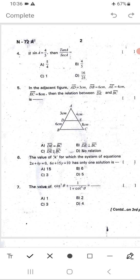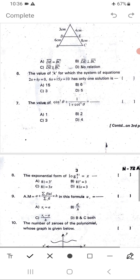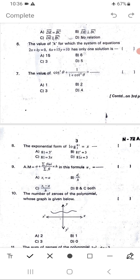Seventh question: The value of cos²θ + 1/(1 + cot²θ). Eighth question: The exponential form of log₃81 = x.